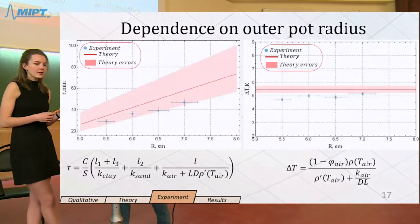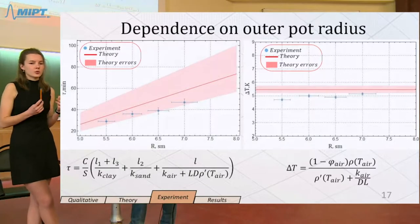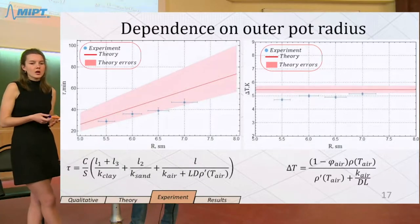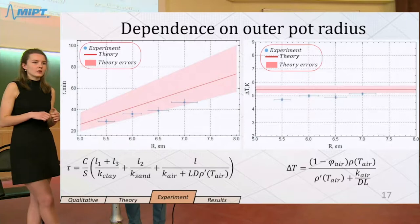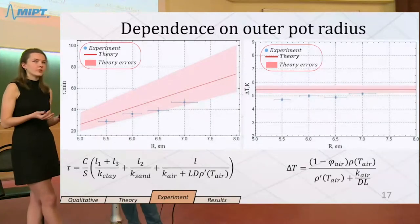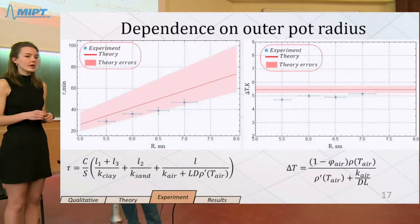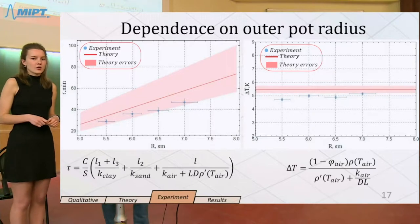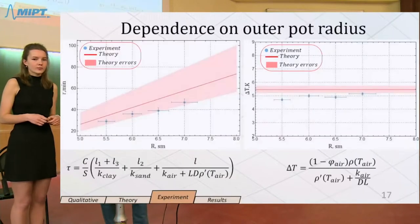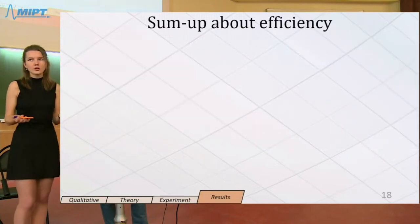And finally, the dependence on outer pot radius. Parameter tau increases with the increase of radius. This is due to the fact that with increasing radius, we have to spend more time in order to cool it down. And there is no dependence of temperature difference on radius, both given by our theoretical model and experiment.